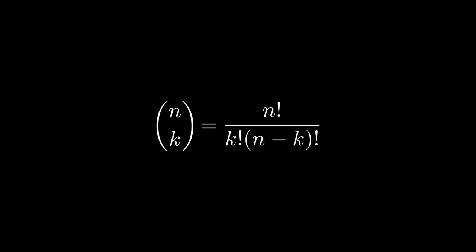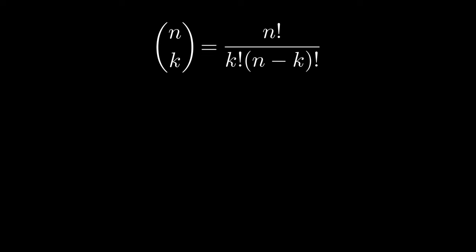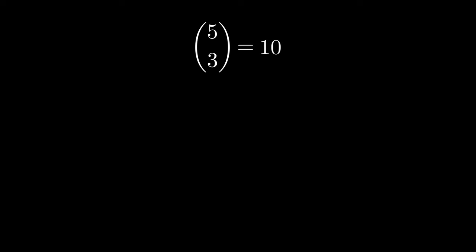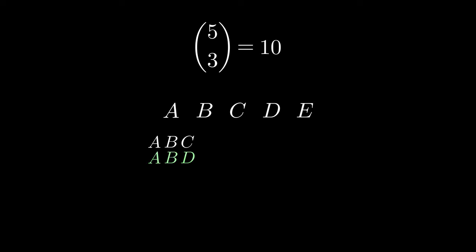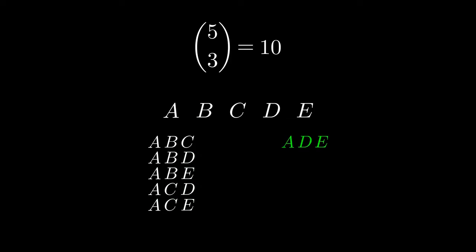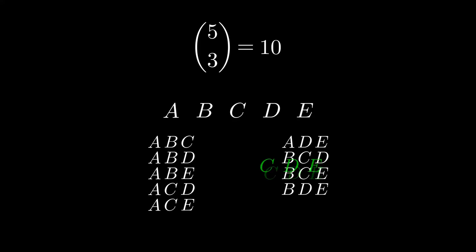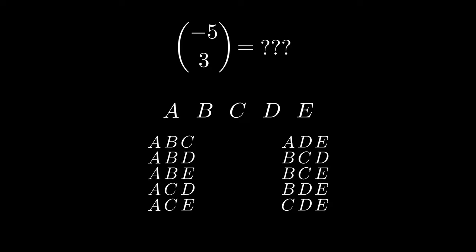Binomial coefficients n choose k are how we count the number of ways to choose k objects out of n. Clearly, that must mean that n must be positive, right? We can choose three objects out of a total of five, but how would we choose three objects out of a total of negative five? What does that even mean? And even if we could make sense of it, why would we care?